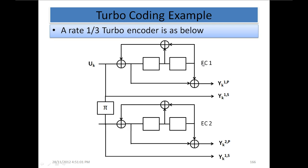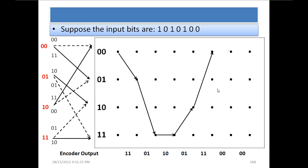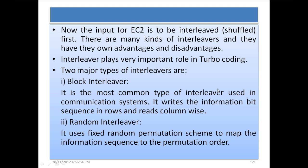Now we have to find the output of encoder 2. The input for encoder 2 must be interleaved — shuffled — first. There are many kinds of interleavers, and they have their own advantages and disadvantages. Interleavers play a very important role in turbo coding. Two major types of interleavers are block interleavers and random interleavers. Block interleavers are the most common type; they write the information bit sequence in rows and read column-wise.